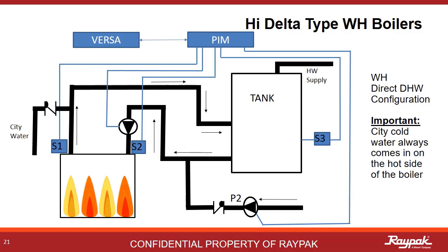Moving on from hydronic and into WH-type appliances, as in water heaters. When a high-delta is purchased to be a water heater, there is only one mode of operation, so the plumbing is more specific. Here is a drawing for a water heater application. Important note: city cold water always comes in on the outlet side of the boiler to be mixed with the hot water the boiler is producing on the way to the tank. Introducing city cold water on the inlet side of the boiler will likely lead to going below the required minimum inlet temperature of 105 degrees Fahrenheit, resulting in condensing in the boiler.